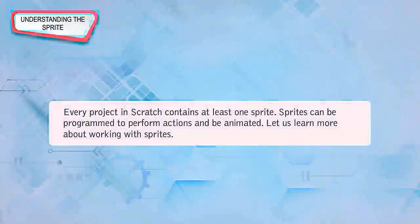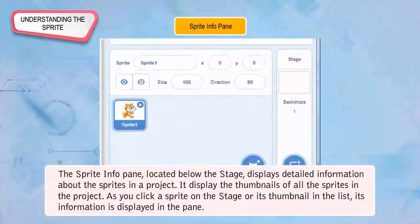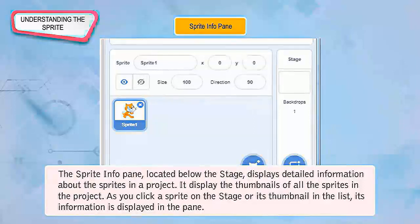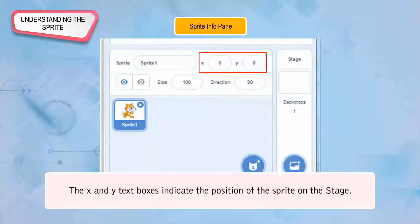Understanding the Sprite: Every project in Scratch contains at least one sprite. Sprites can be programmed to perform actions and be animated. The Sprite Info Pane, located below the stage, displays detailed information about the sprites in a project and shows thumbnails of all sprites. As you click a sprite on the stage or its thumbnail, its information is displayed in the pane. The Sprite Text Box displays the name of the sprite, and you can click to type a new name.